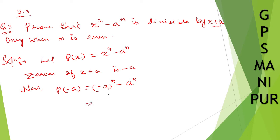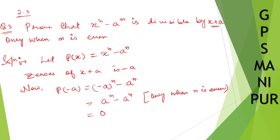(-a)^n minus a^n. Now (-a)^n becomes a^n only when n is even. So this equals a^n minus a^n = 0. This condition holds only when n is even.